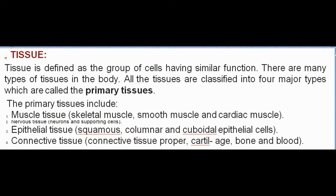There are many types of tissues in the body. All tissues are classified into four major types called the primary tissues. These include muscle tissue — skeletal muscle, smooth muscle, and cardiac muscle; nervous tissue — neurons and supporting cells; epithelial tissue — squamous, columnar and cuboidal epithelial cells; and connective tissue — connective tissue proper, cartilage, bone, and blood.